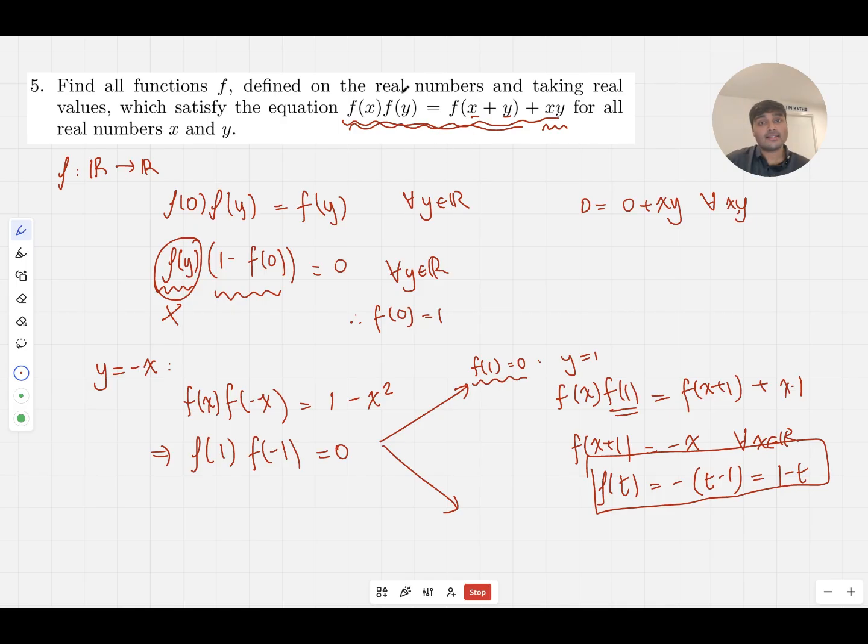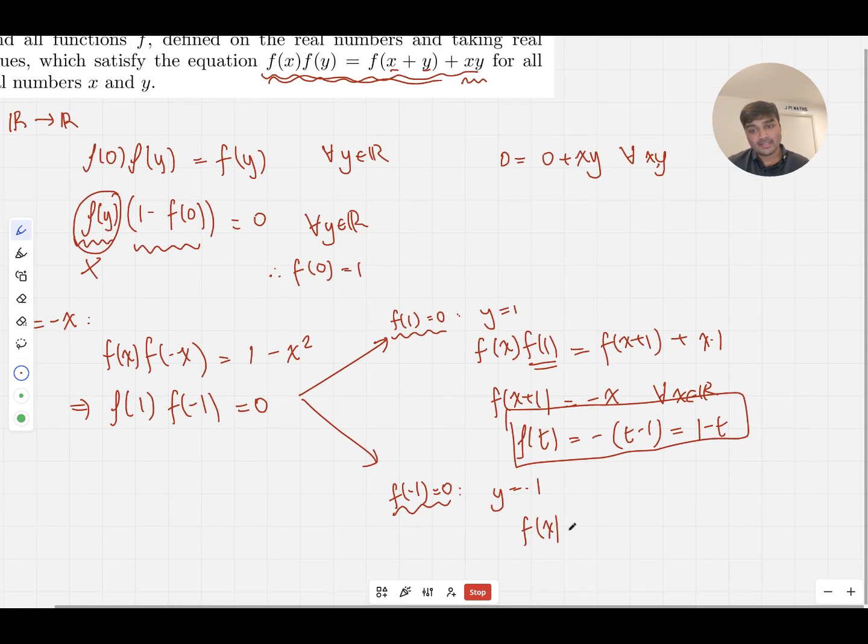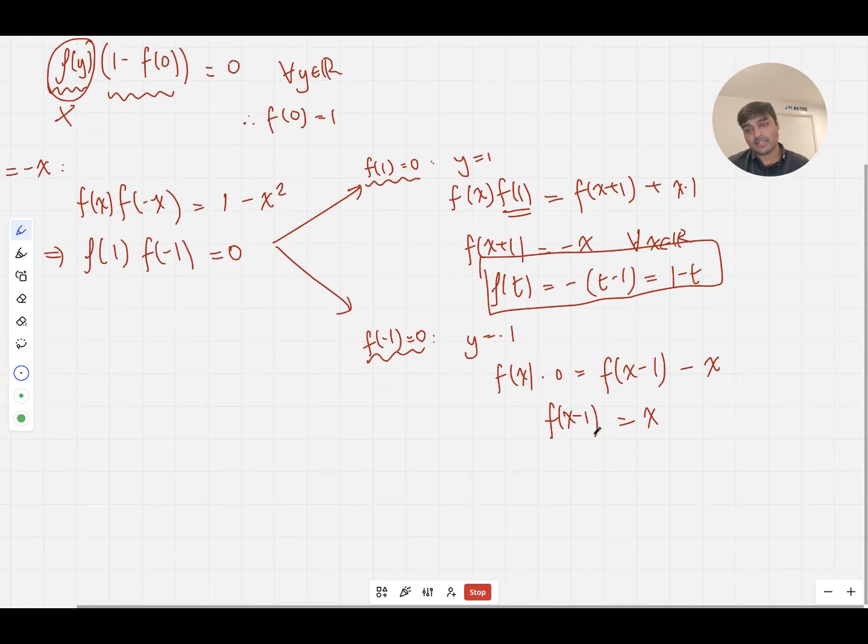So this is a contender for a solution to this functional equation that we have at the start. Of course, we still need to verify that it does indeed satisfy this. It turns out it does, but we'll check that at the end. But we found a contender solution. So if we have the case where f(1) is zero, we get the function f(t) = 1 - t. And we can get something similar if we assume f(-1) is zero. If we assume f(-1) is zero and plug in y equals negative one this time, we get f(x)f(-1), which is zero, equals f(x - 1) - x. If I rearrange this, I get f(x - 1) = x. And so again, replacing x - 1 with t, I get f(t) is t + 1.